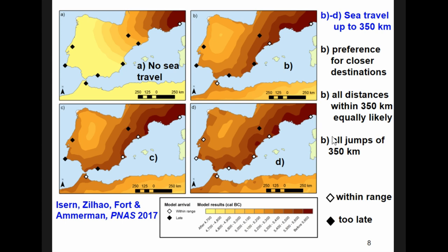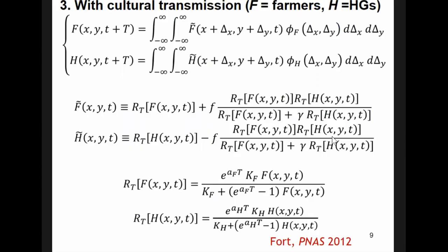So, in this work, what we concluded is that, for sure, there was sea travel of at least 350 kilometers. And then, this is just to mention that, this is the same equation as before, but here we add cultural transmission. This F is the only difference, this is the cultural transmission effect.